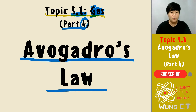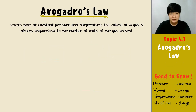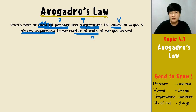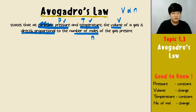Avogadro's Law states that at constant pressure and temperature, the volume of the gas is directly proportional to the number of moles. So V is directly proportional to n, with the condition that pressure and temperature remain constant.